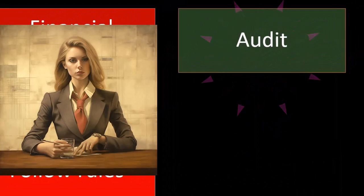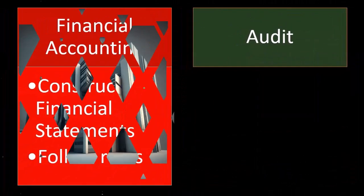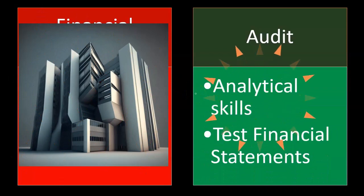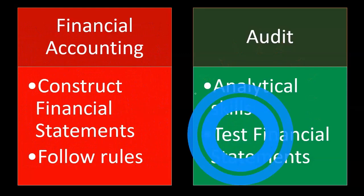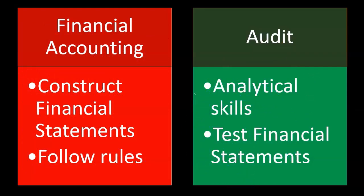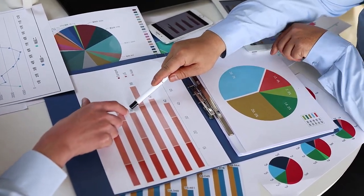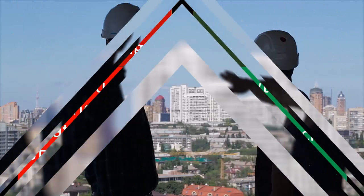On the audit side, we take the end product — the building or the financial statements — and test to see if it is sound. Is the building structurally sound, could it withstand an earthquake? Are the financial statements structurally sound — are they complete, do they have everything that should be in them, and do they accurately reflect the financial condition and performance of the company over a certain time period?